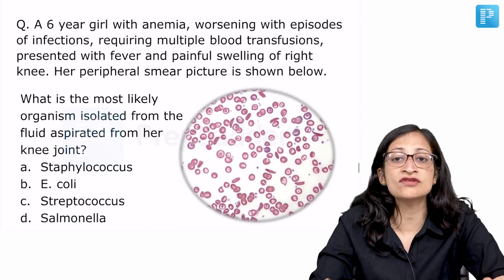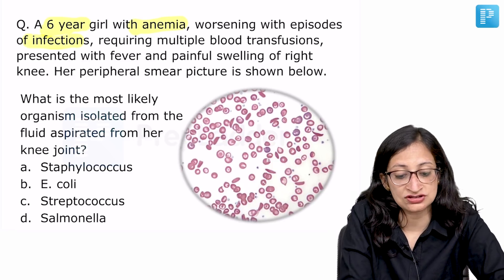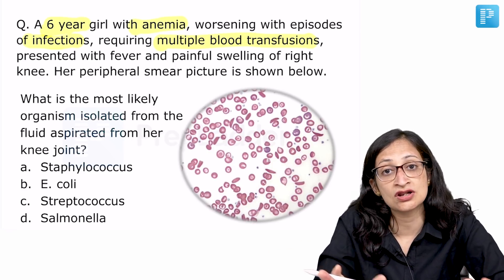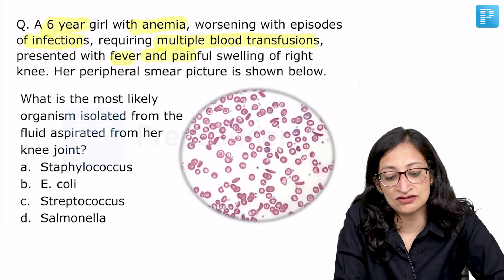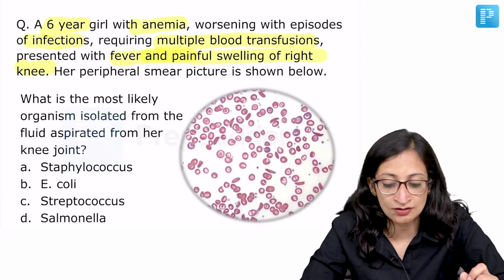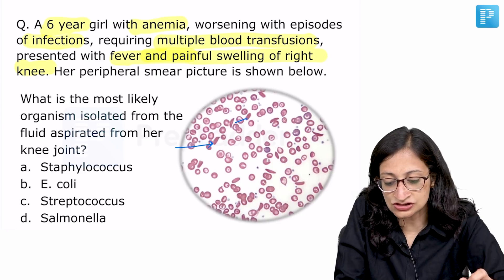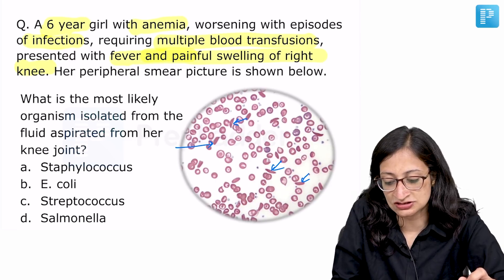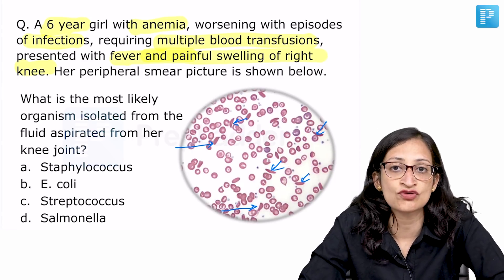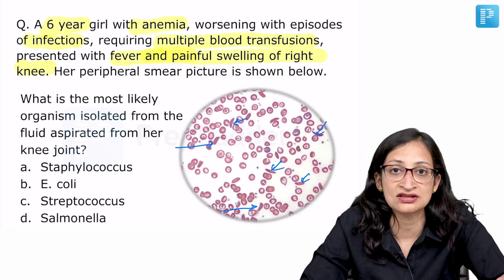Moving ahead: a 6-year-old girl with anemia that worsens with episodes of infections, requiring multiple blood transfusions, presented with fever and painful swelling of her right knee. Her peripheral smear is shown below. We can clearly make out sickle-shaped RBCs, so this child is suffering from sickle cell disease, diagnosed by hemoglobin electrophoresis or HPLC showing HbS peak, or by sickle mutation testing in the globin gene.